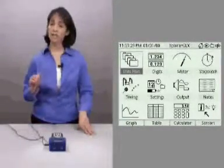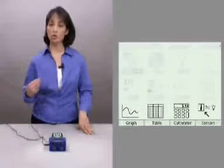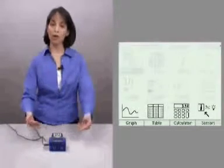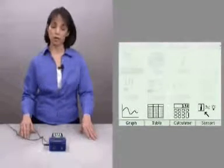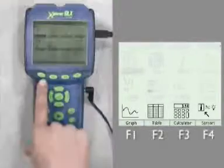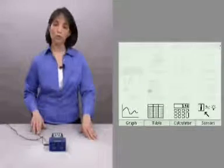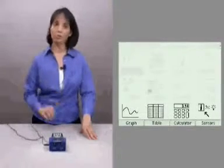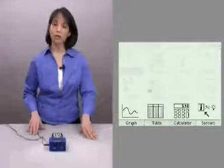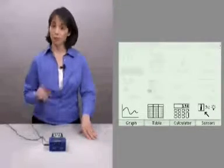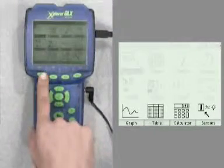For even easier access, the four most commonly used screens have been placed on the bottom row of the home screen and associated with one of the function buttons underneath it. In order to get to that screen, just push the button. So let's go ahead and open up a graph display by pushing the F1 button.